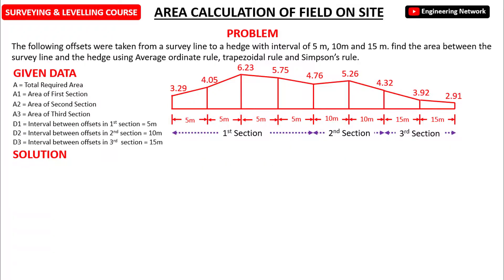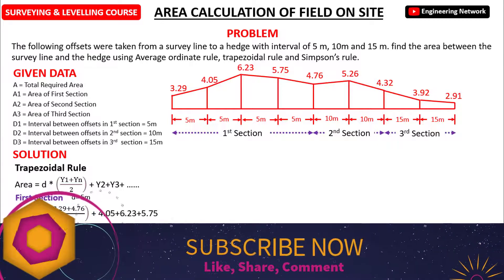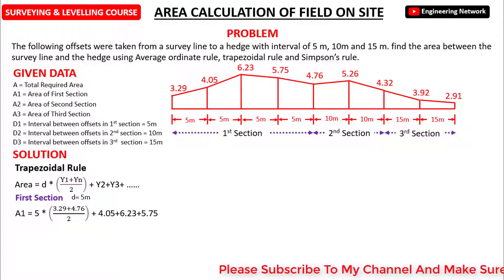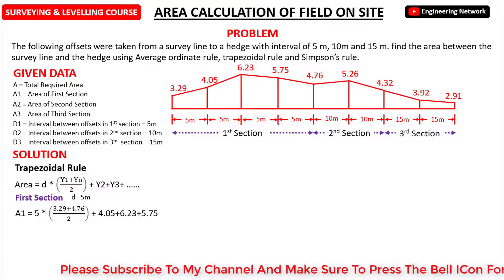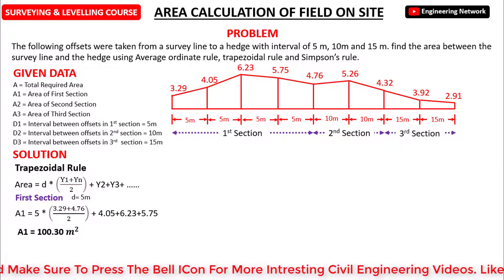Next is the trapezoidal rule, which states that area equals D into the average of the first and last ordinate plus the sum of the remaining ordinates. For the first section with interval 5m, A1 equals 5 into (3.29 + 4.76) divided by 2, plus the sum of the remaining ordinates. After calculation, the area of the first section is 100.30 square meters.